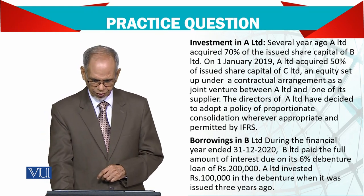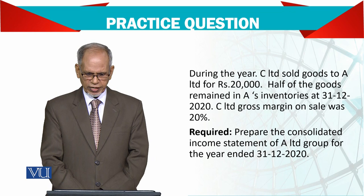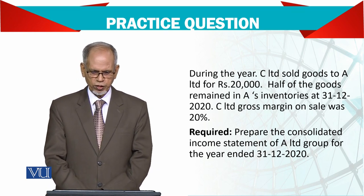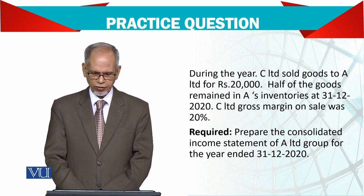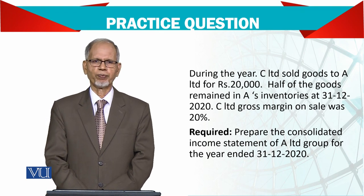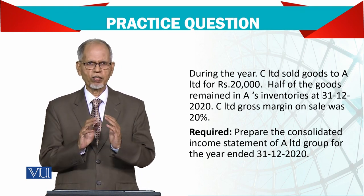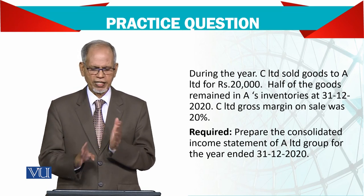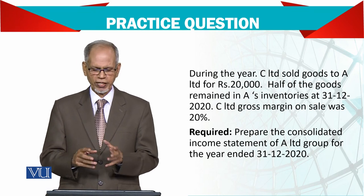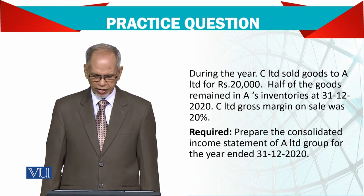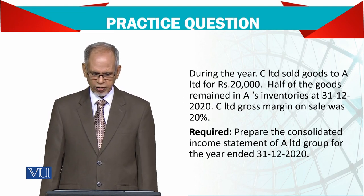During the year, C Limited sold goods to A Limited for 20,000. Half of the goods remained in A's inventory on 31st December, and C Limited's gross margin on sale was 20%. Now this question has become a bit bigger — it has a subsidiary, joint arrangements, and also an adjustment for the stock increase and an interest adjustment to deal with. Prepare the consolidated income statement of A Group for the year ending 31st December 2020.